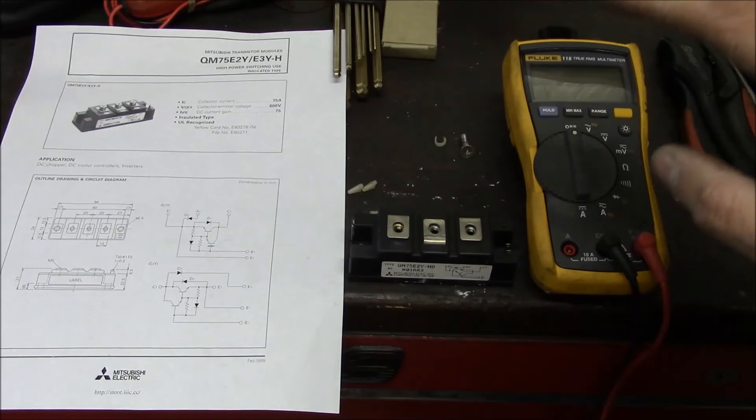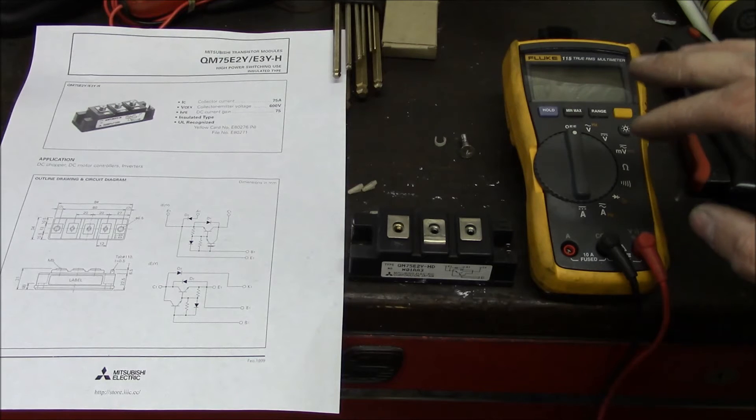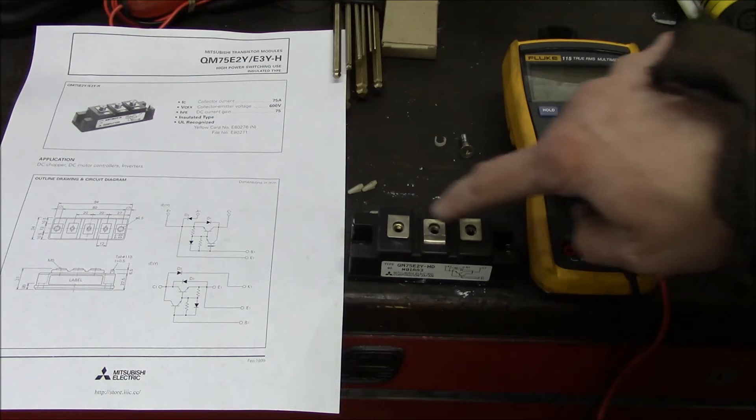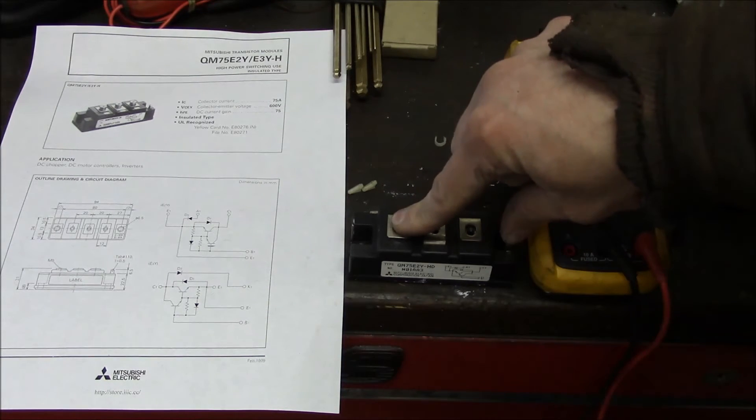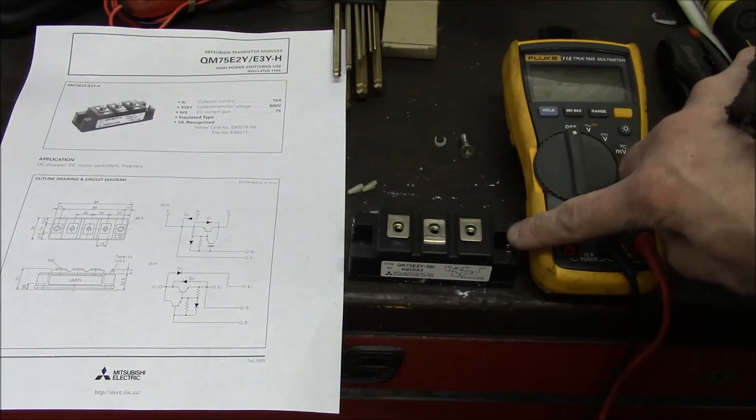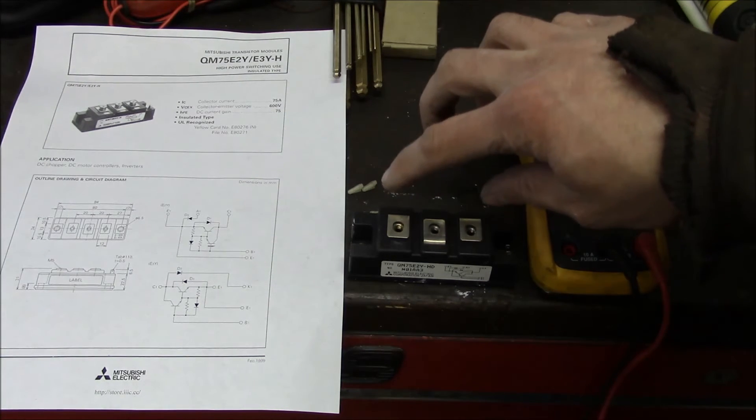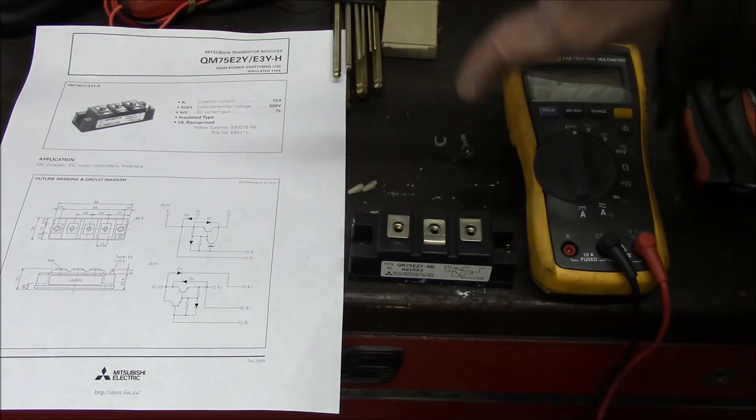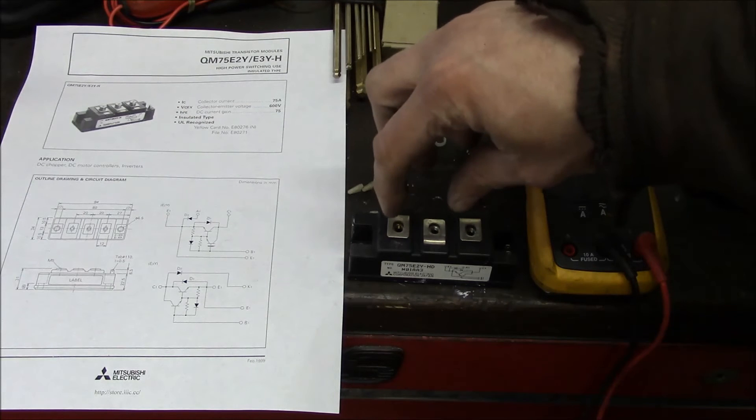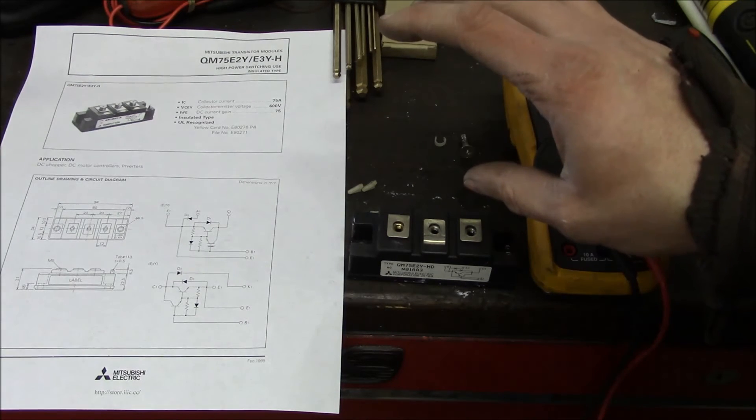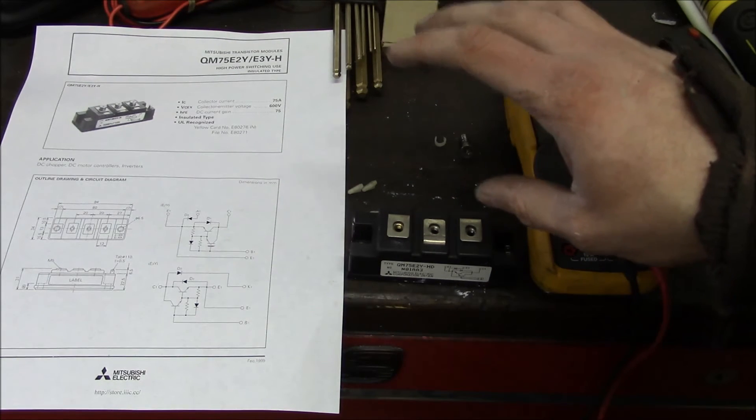So when I was testing this thing to see what was going on, all I did was I applied 5 volts DC from the emitter to the gate, which is this terminal or this terminal, and the gate is this other small terminal. And that basically turns on the IGBT module. And I just used a load, in this case a regular light bulb with a 12-volt power supply, and connected it across the collector and the emitter. And when I fired the gate, the light turns on. So that means that the switching side of this IGBT is fine.